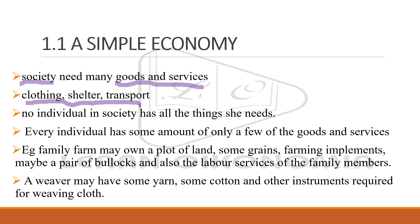Every individual has some amount of a few things, and for the rest of what he or she wants, they would be buying from the market. Consider the case of a family farm — a plot of land where grains are grown. The family members have farming equipment and irrigation facilities, and labor services are provided by the family members themselves.